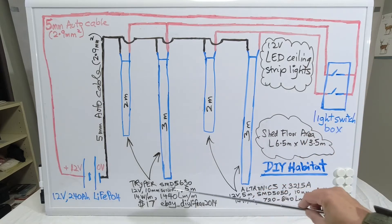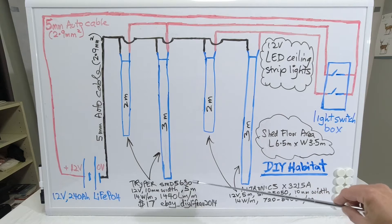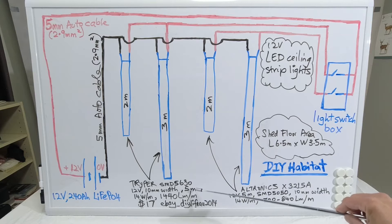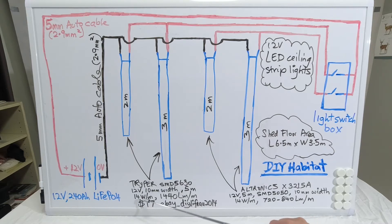This is a three meter Triper SMD 5630 LED, 10mm wide. It comes supplied in a 5 meter roll and the power consumption is 14 watts per meter and the luminance is 1440 lumens per meter. It only cost $17 to buy on eBay from a store DIY live AU2014, which I believe is the online store for Triper Australia located in Dandenong, Victoria.